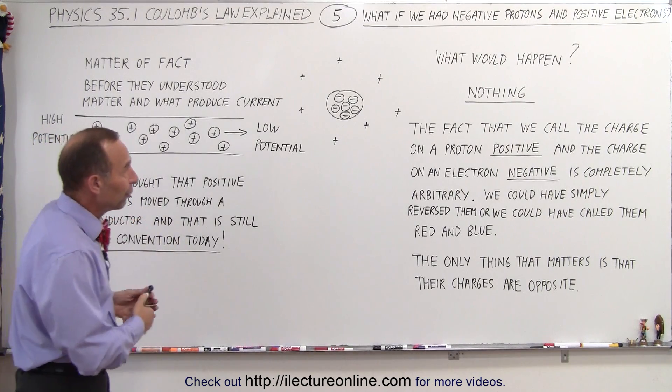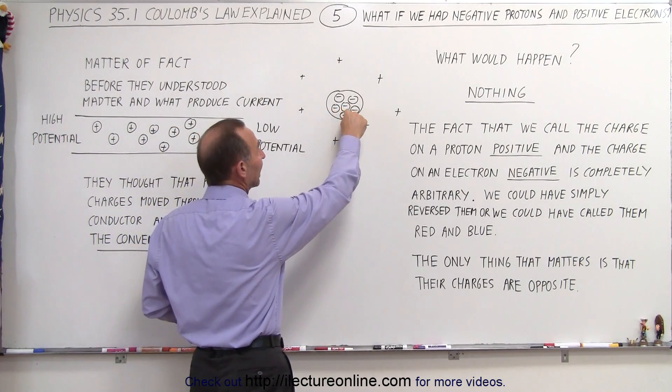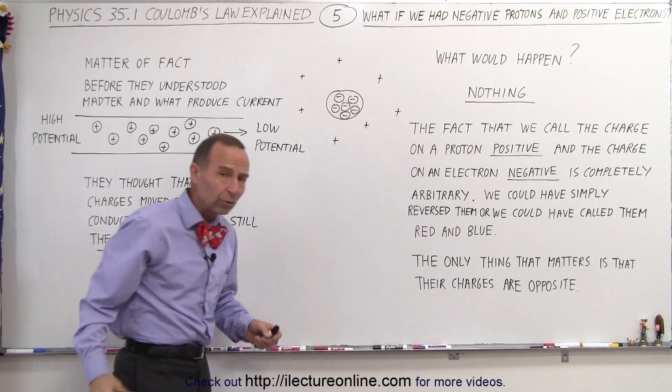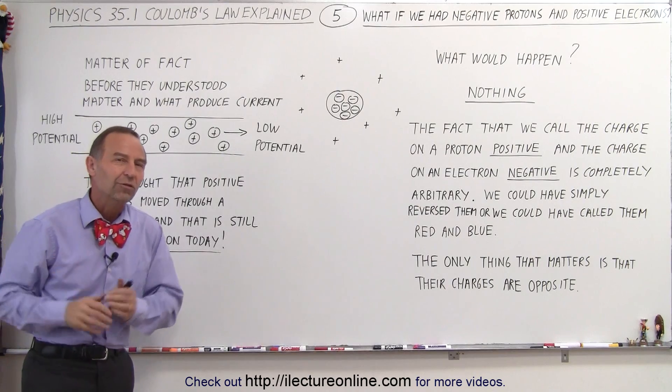So if we had a universe that had protons that are negative and so the nucleus was negatively charged and the electrons swarming around the nucleus were positively charged, that would work just fine.